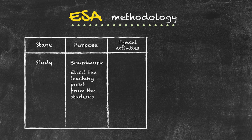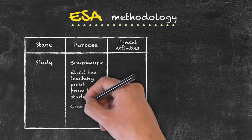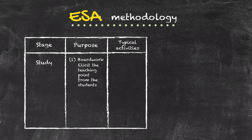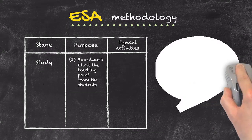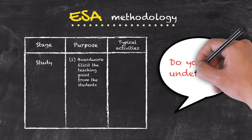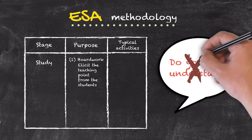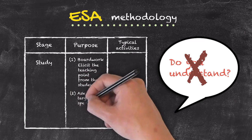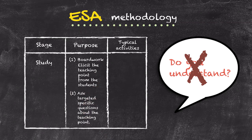Once that information has been generated on the board, the teacher can then cover any gaps in knowledge that they are unable to elicit from the students. With the teaching point complete, we move into the second part of the study phase: checking the students' understanding. One question often used in classrooms is 'Do you understand?' — but this is a waste of time because students will quite often say yes whether or not they do. Instead, to check understanding we have to ask targeted, specific questions about the teaching point so that by answering them, the students demonstrate understanding of the material covered.